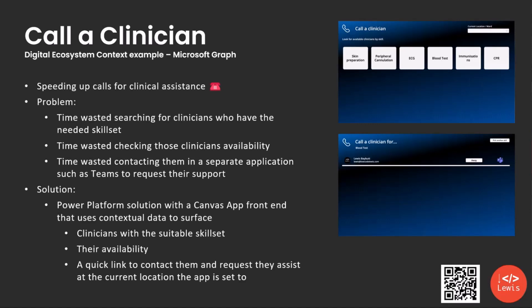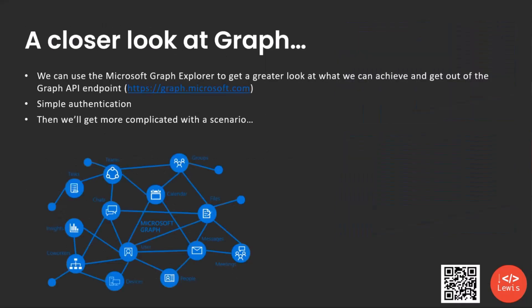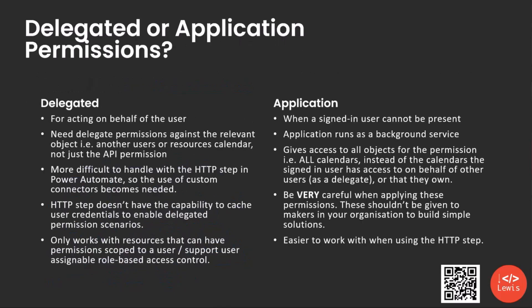This solution uses Microsoft Graph and context from the digital ecosystem to return information on clinicians' availability based on their calendar availability and presence in Microsoft Teams. Microsoft Graph is basically a platform with an API that lets us get hold of data we can use contextually from our digital ecosystem — the Microsoft Cloud. We can get hold of things like Microsoft Teams messages, device information, stuff about our co-workers, and different insights to deliver impact with our solutions.